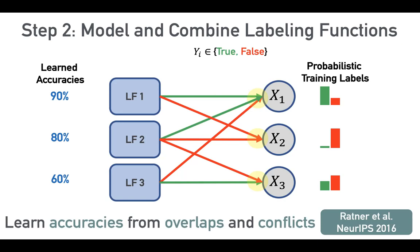At a high level, the logic the model uses is: if you have multiple labeling functions and some of them always tend to agree with each other, while there's one that randomly disagrees across a bunch of data points — that one that's randomly disagreeing is probably not very accurate. I'm simplifying this a lot, so I'd encourage people to look at the papers for more details on the algorithms.